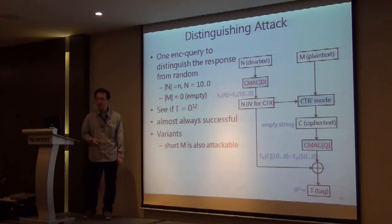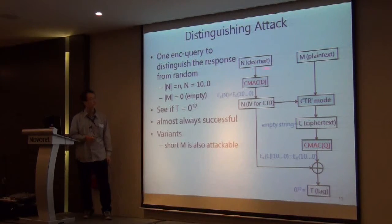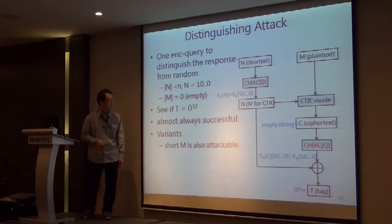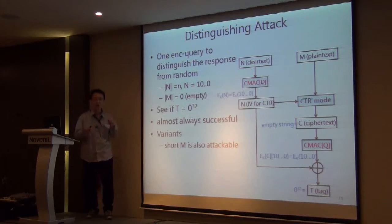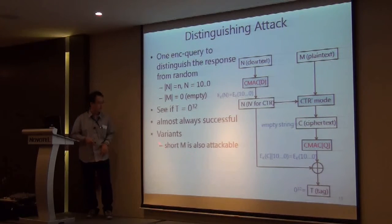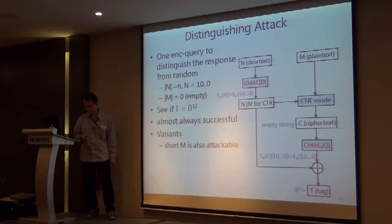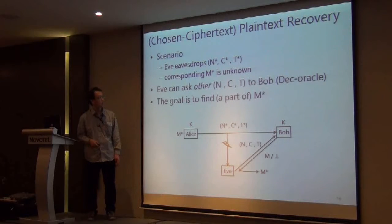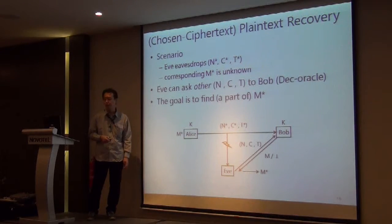Considering the distinguishing attack, the situation is almost the same. We first perform one encryption query having an N-bit cleartext and an empty plaintext, then check if the response gives an all-zero tag value. This attack is almost always successful, unless a random function accidentally returns the same all-zero tag value. We can extend this attack slightly even if the message is not empty but has quite short ranges. Finally, the attack can be extended to plaintext recovery in some restricted scenarios.